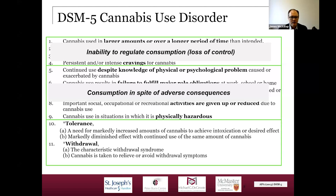The final two symptoms are tolerance and withdrawal, reflecting physiological dependence. Tolerance is the need for more cannabis to experience the desired effect, or a markedly diminished effect with continued use of the same amount. Withdrawal is when the individual stops using cannabis and experiences the characteristic withdrawal syndrome — or describes using cannabis specifically to relieve or avoid withdrawal symptoms. In some cases individuals may use cannabis chronically to offset withdrawal symptoms without being fully aware of them.